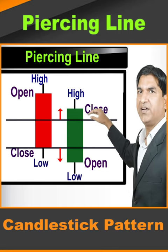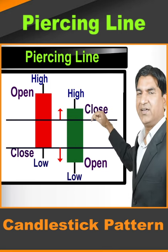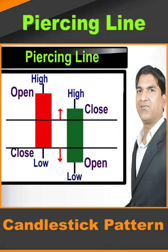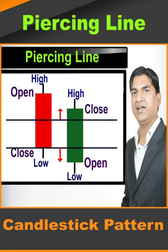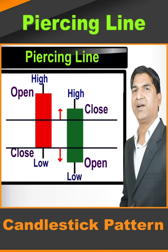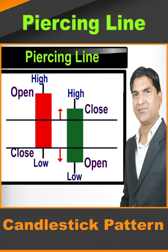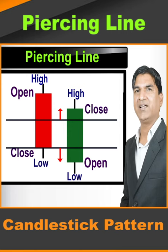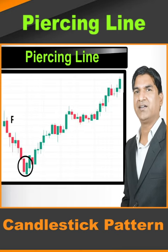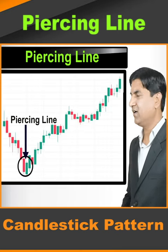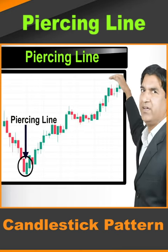If that bullish candle closes higher than the 50 percent of the bearish candle, it is called the piercing line candlestick pattern. This is a very powerful candlestick pattern — after this pattern you will see a big up move on the higher side.